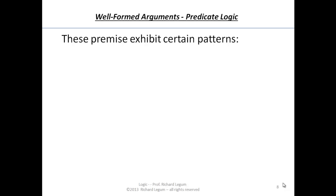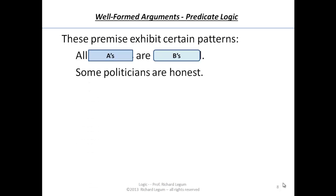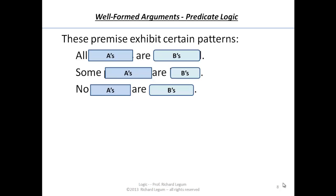It's worth noting that these kinds of statements or premises exhibit a certain pattern. All bachelors are unmarried - notice it's all A's, or bachelors, are B's. Some politicians are honest - some A's are B's. Similarly, no Muslims are Christians - no A's are B's.